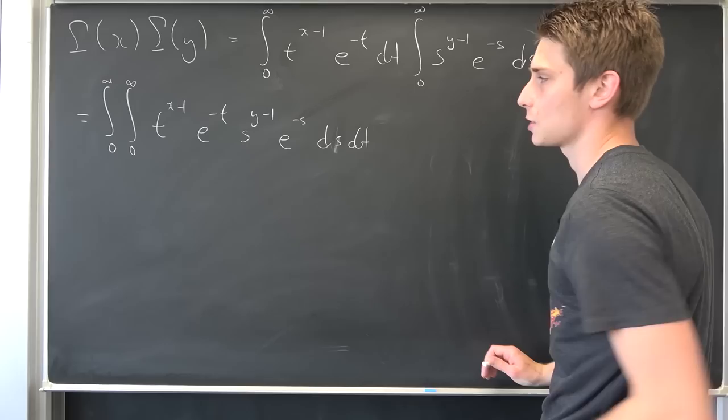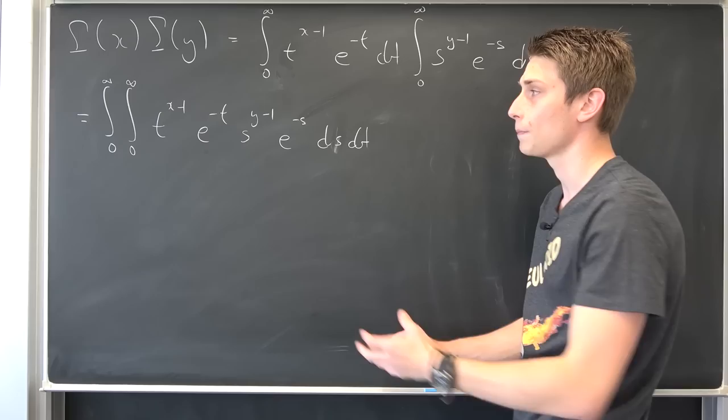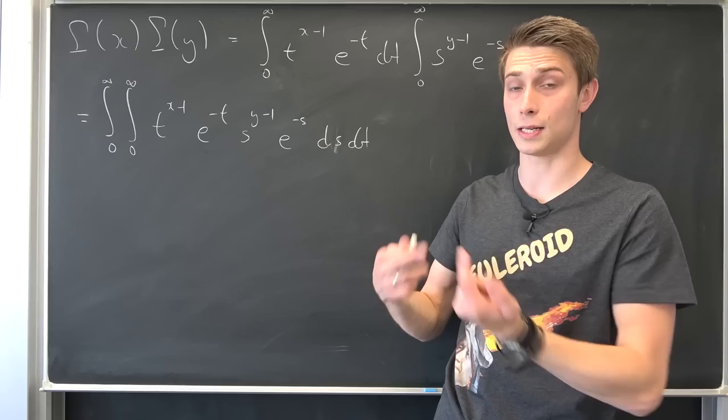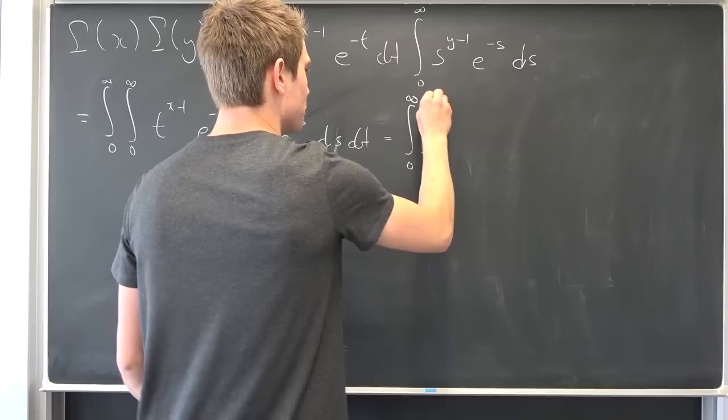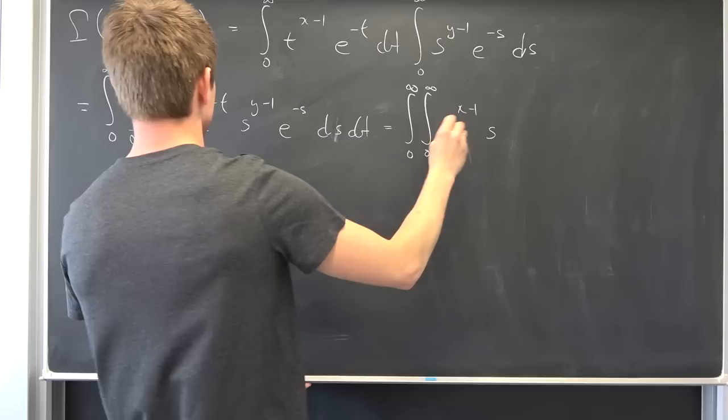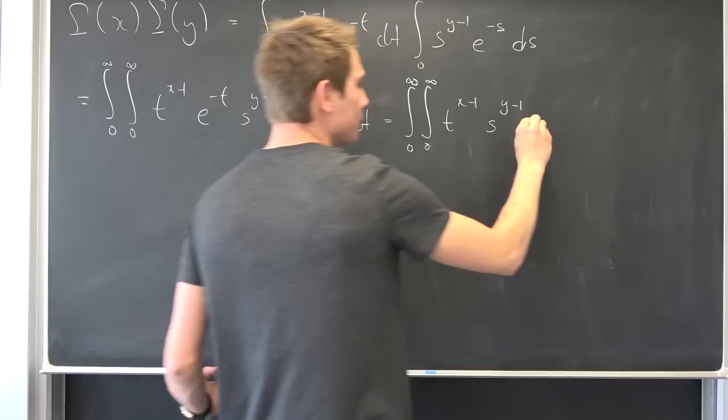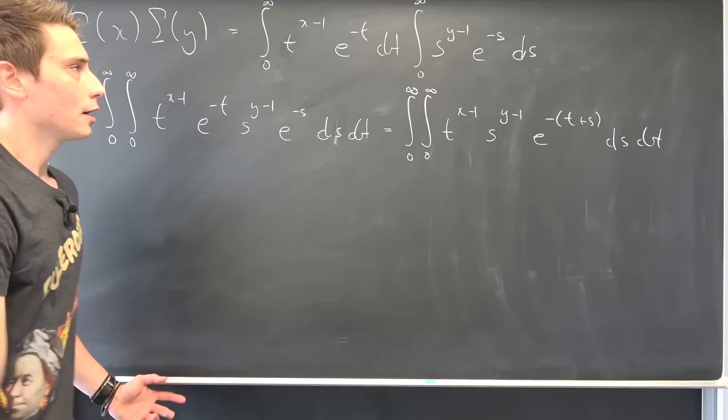We have this exponential function, and it has a nice functional equation in the real numbers, meaning we can combine e to the negative t and e to the negative s into e to the negative (t plus s). So let's write this out: the double integral from 0 to infinity of t to the x minus 1 times s to the y minus 1 times e to the negative (t plus s), ds dt.